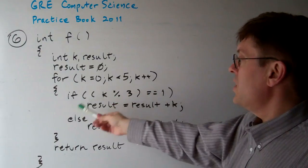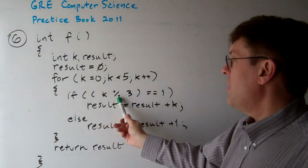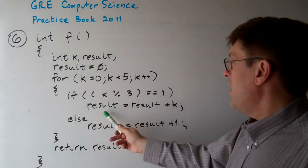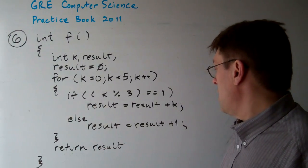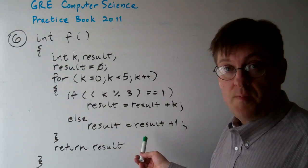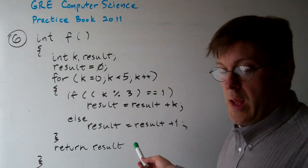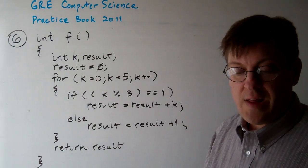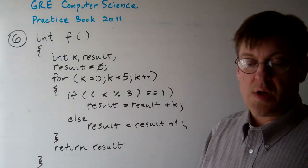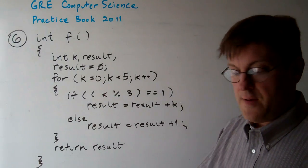Basically, you have a situation where if k mod 3 is 1, then the result is result plus k. Otherwise, the result is the result plus 1, incremented by 1. And the function f returns the result. And the question is, what's the value returned as a result of the call to f?